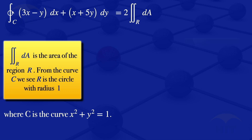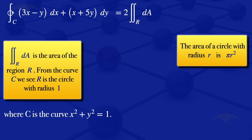We know that the area of a circle with radius r is pi r squared. Using that formula, the area of the region R is pi multiplied by 1 squared, which equals pi. So the result is 2 multiplied by pi, giving us 2 pi. Therefore, the integral along the closed curve C in the positive direction equals 2 pi.